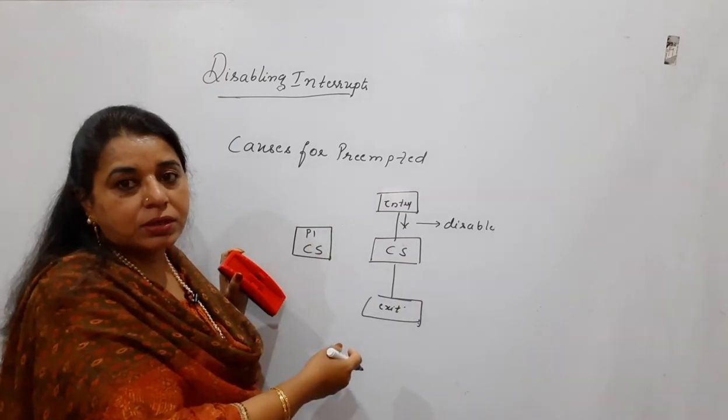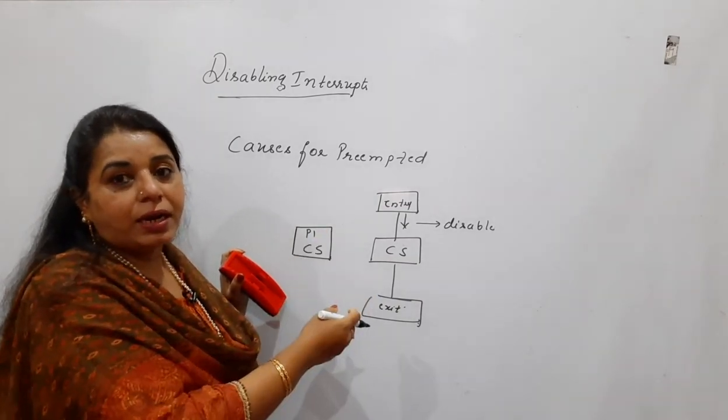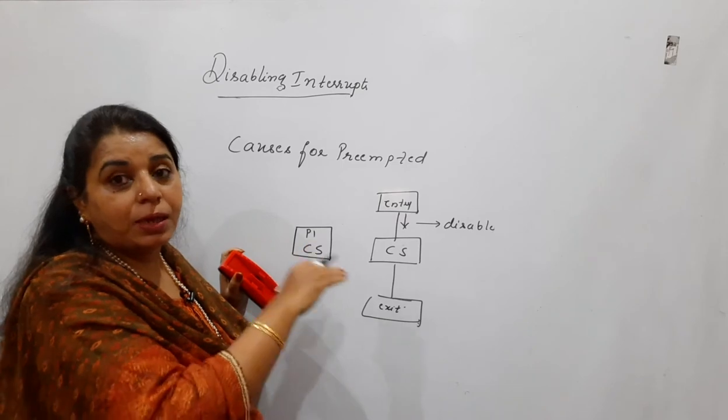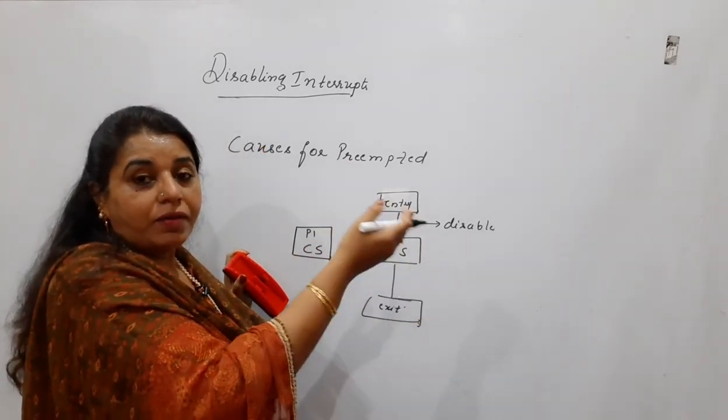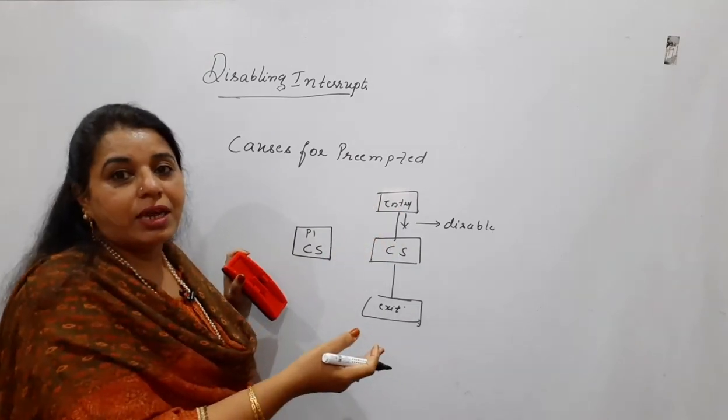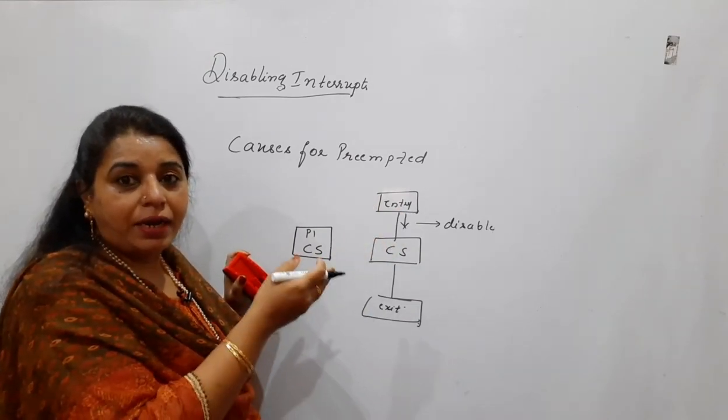Whatever is the existing process that is going on, it gets interrupted. And when it gets interrupted, the CPU will preempt the existing process and it will try to serve the other process which has made an interrupt call.